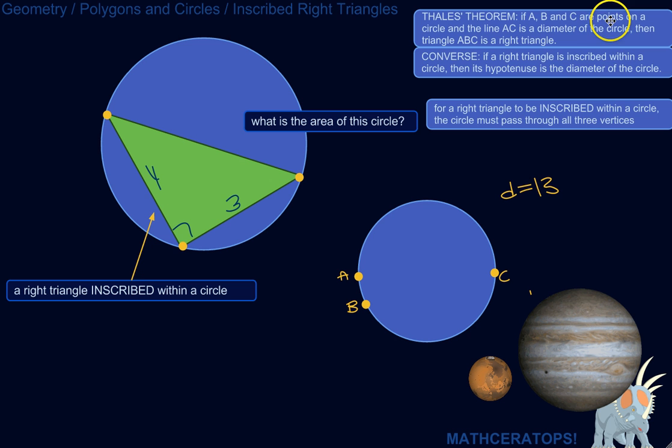Thales' theorem says if A, B, and C are points on a circle, and the line AC is a diameter of the circle, then triangle ABC is a right triangle.